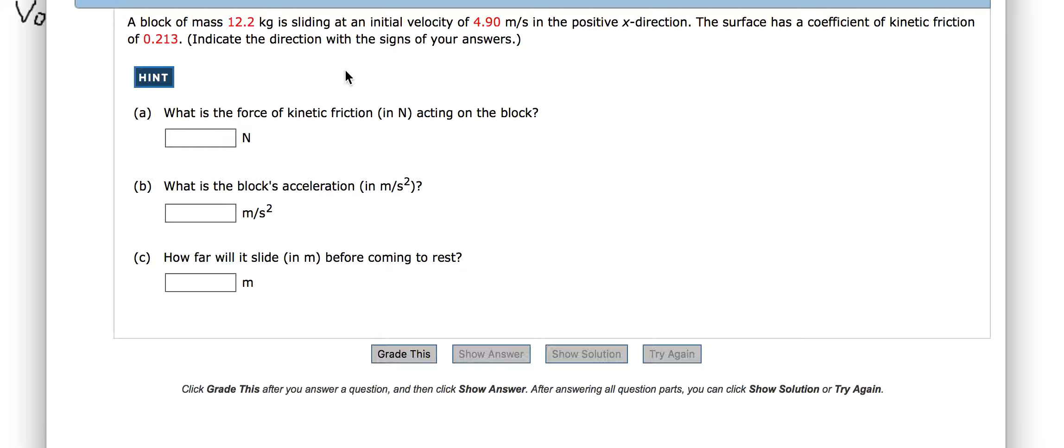A block of mass 12.2 kilograms is sliding at an initial velocity of 4.9 meters per second in the positive x direction. The surface has a coefficient of kinetic friction of 0.213. What is the force of kinetic friction in newtons acting on the block? What is the block acceleration in meters per second squared, and how far will it slide before coming to rest?